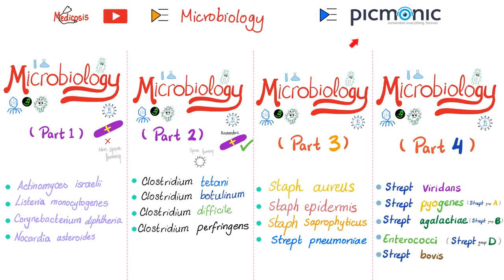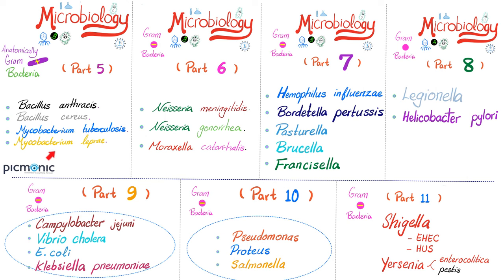On my channel you'll find a playlist called Picmonic and another called Microbiology. In video one we talked about gram-positive rods, video two also gram-positive rods, video three gram-positive cocci including Staph aureus and Strep pneumo, video four covered Strep viridans, Strep pyogenes, Strep agalactiae, Enterococci, and Strep bovis, part five covered anthrax, tuberculosis, and leprosy, part six covered Neisseria meningitidis, Neisseria gonorrhoeae, and Moraxella catarrhalis, part seven covered Haemophilus, Bordetella, Pasteurella, Brucella, and Francisella.